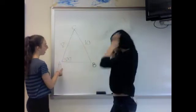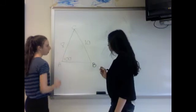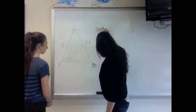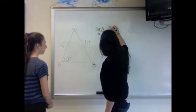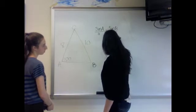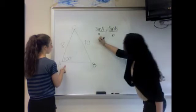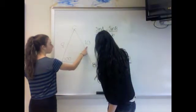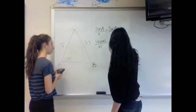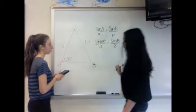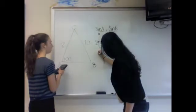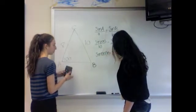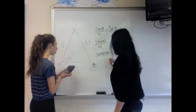In triangle ABC, angle A is 100 degrees, side A is 10 and side B is 8. So use the law of sines: sine A over A equals sine B over B. Now you cross multiply, and 8 times the sine of 100 equals 7.878462024. You divide by 10.